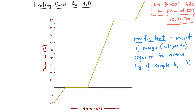So if we have a 10-gram sample of ice and we want to heat that up, we need to know the specific heat of ice. In this case, ice has a specific heat of 2.09 joules per gram per degree Celsius. That means it takes 2.09 joules for every gram of ice to increase the temperature by one degree Celsius.